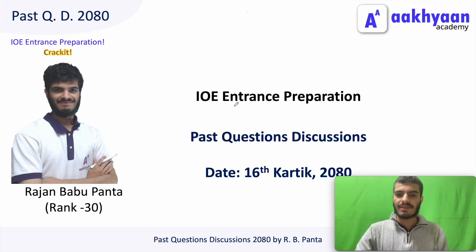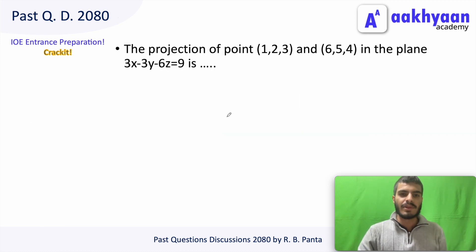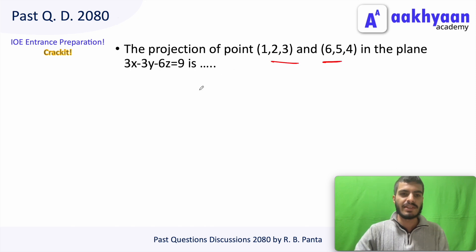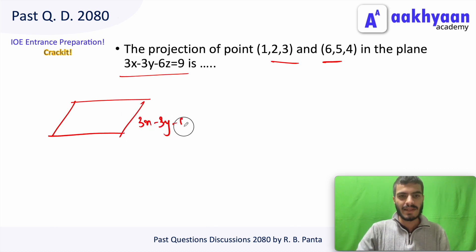Hello everyone. Today I am going to talk about the next question. The first question is the projection of a point onto a plane. The equation of the plane is 3x - 3y - 6z = 9. The key concept here is the normal to the plane.